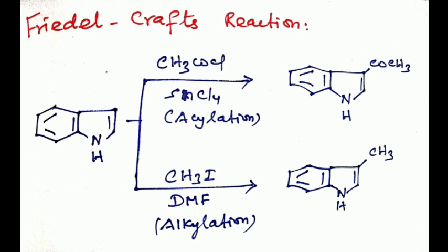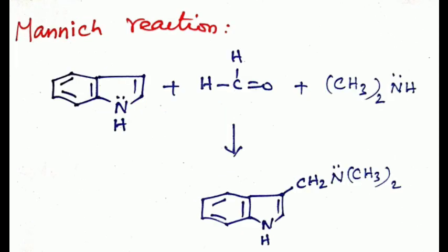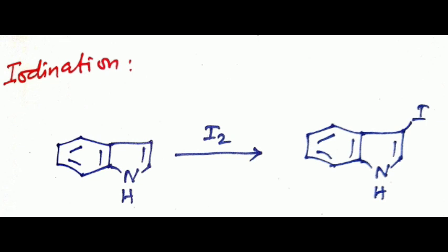Mannich reaction is very important. Here indole is combined with formaldehyde and dimethyl amine to form 3-dimethyl amino methyl indole as a product. Similarly indole reacts with iodine to form 3-iodo indole, this is called iodination reaction.